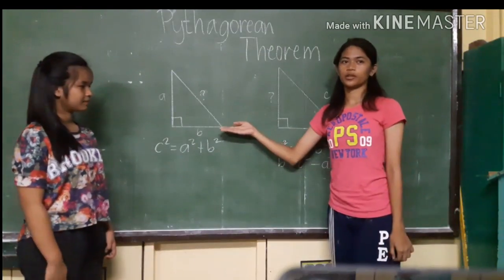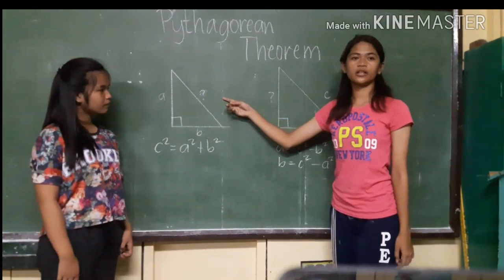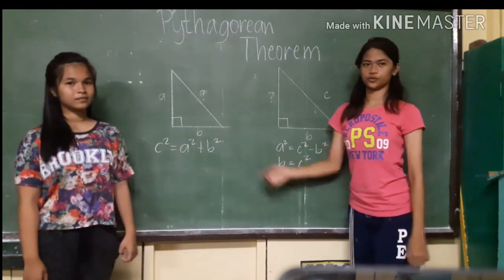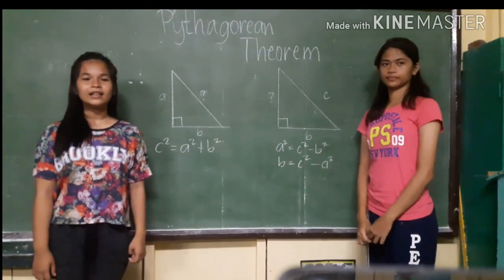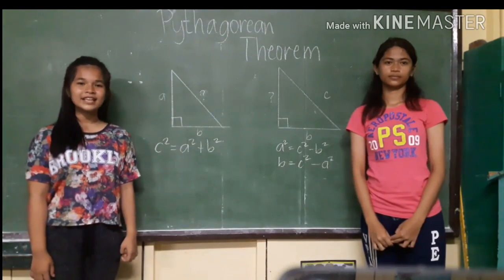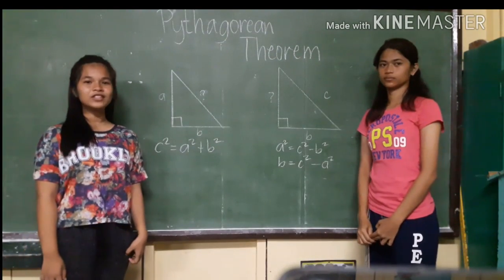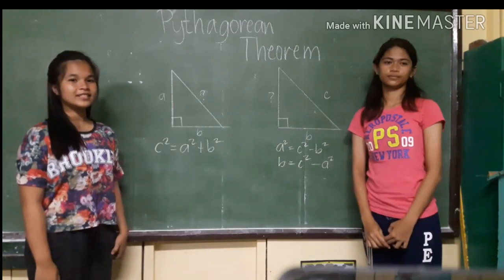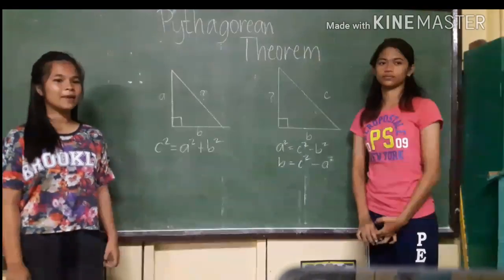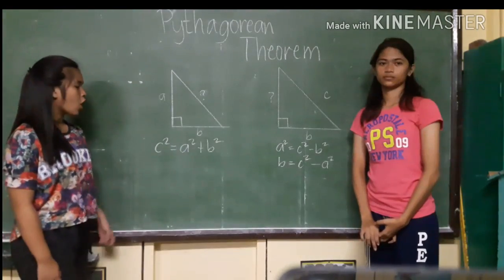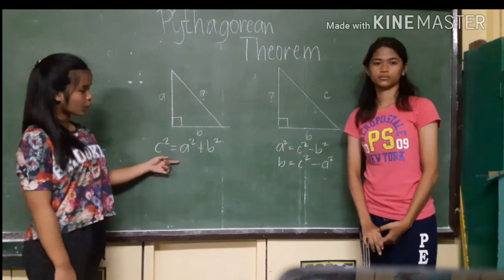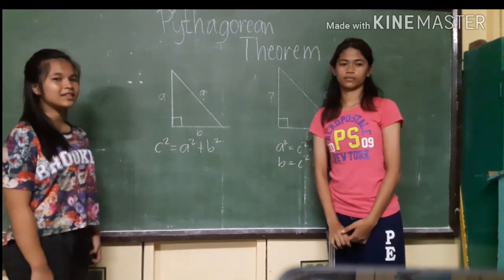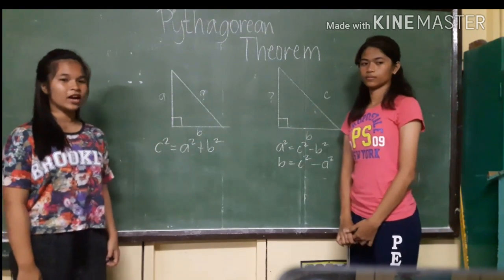In this example, the hypotenuse of the right triangle is missing. We can use the Pythagorean theorem. The Pythagorean theorem states that the sum of the squares of the lengths of a right triangle is equal to the square of the length of the hypotenuse, or c squared equals a squared plus b squared, where a and b are the lengths of the legs of the right triangle.